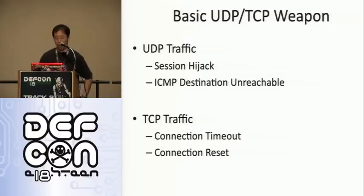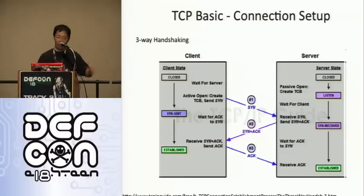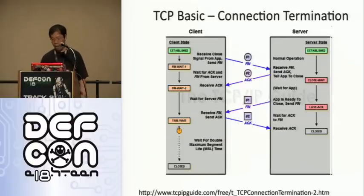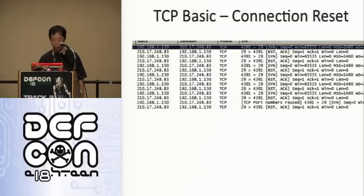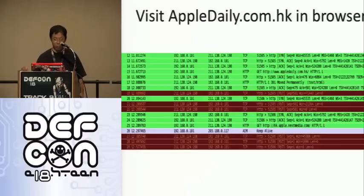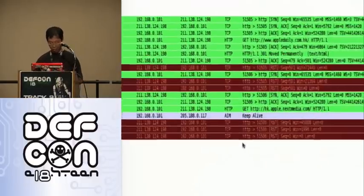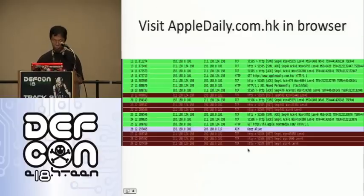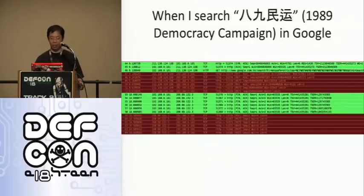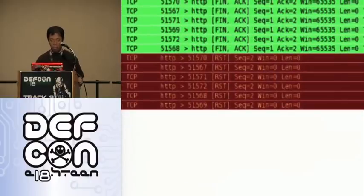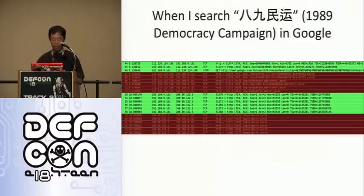There are also basic UDP and TCP weapons: TCP traffic and UDP session hijacking, connection timeout, and reset. When I tried to go to apple.com.hk — which is blocked in China — I got a reset feedback. When I typed content about the 1989 democracy campaign in Chinese, I got even more resets. There is a research paper about how to identify forged reset packets.